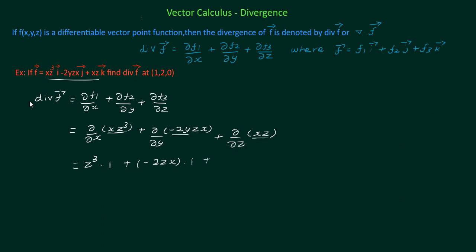So x is a constant. Differentiation value of z is 1. So the value is z³ - 2zx + x.